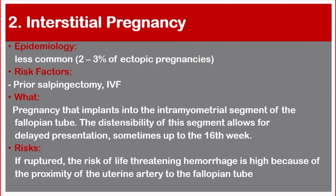Number two: interstitial pregnancy. Epidemiology — less common, two to three percent of ectopic pregnancies. Risk factors include prior salpingectomy or in vitro fertilization. Interstitial pregnancy is one that implants into the intramyometrial segment of the fallopian tube. The distensibility of this segment allows for delayed presentation, sometimes up to 16 weeks.